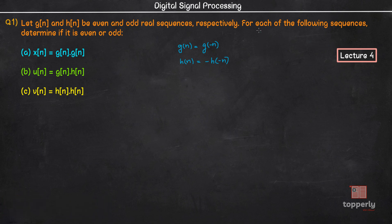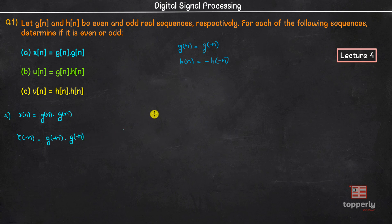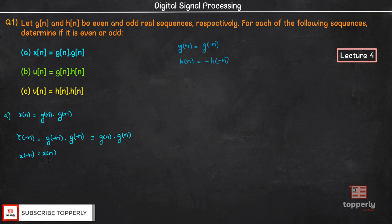Now coming back to our question — for each of the following sequences, determine if it is even or odd. The first sequence given is x(n) equal to g(n) times g(-n). Therefore x(-n) is equal to g(-n) times g(--n), which equals g(-n) times g(n). But we know that g(-n) is equal to g(n), so this is equal to g(n) times g(n), which is x(n). So x(n) is an even sequence.